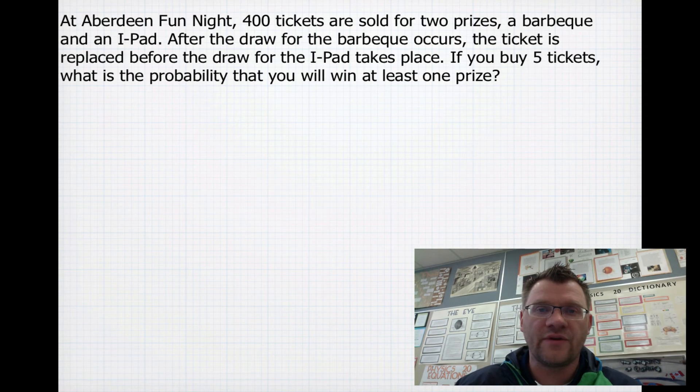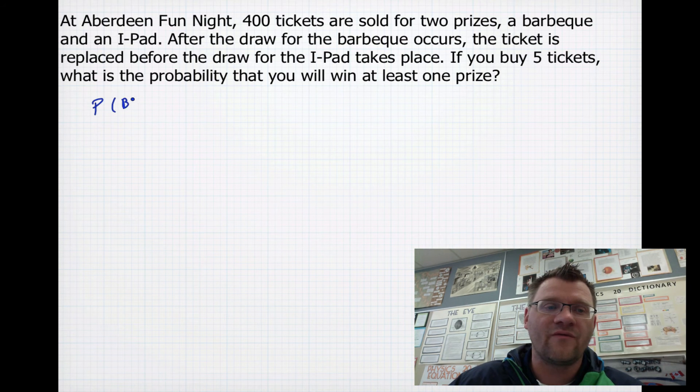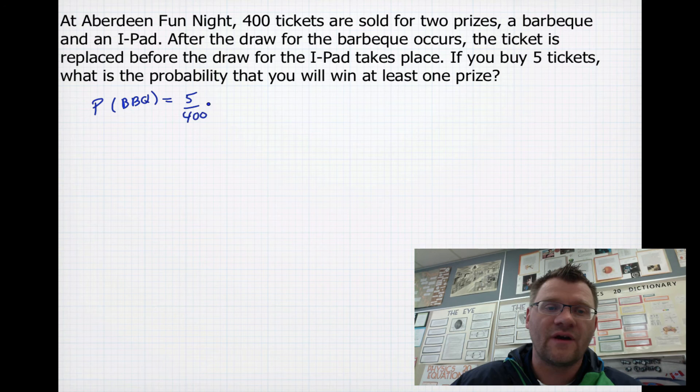At Aberdeen Fun Night, 400 tickets are sold for two prizes, a barbecue and an iPad. After the draw for the barbecue occurs, the ticket is replaced before the draw for the iPad takes place. If you buy five tickets, what's the probability that you're going to win at least one of those prizes? So the probability of winning the barbecue, you have a 5 in 400 chance, because of the five tickets you bought. That's a 1 in 80. You have the same chance to win the iPad.